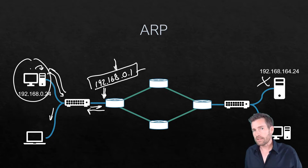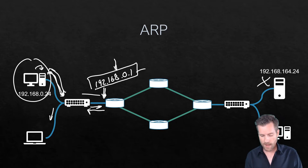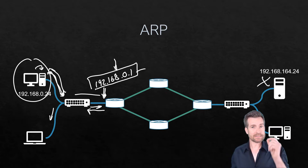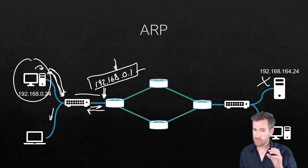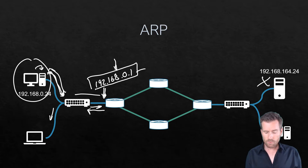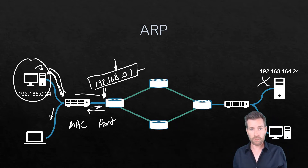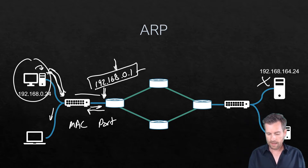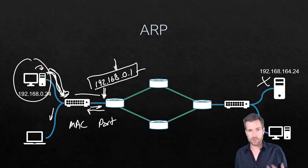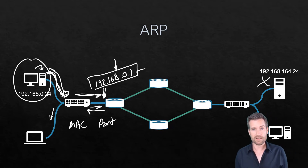One important thing to note: as the ARP request passed through the switch, the switch was also looking at the source MAC addresses of the frames going through it and recording the MAC address along with the port it came in on. This is important for forwarding future frames — rather than broadcasting, it can now send to the specific port associated with a given MAC address.